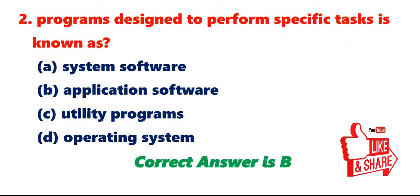Question 2: Programs designed to perform specific tasks is known as A. System software. B. Application software. C. Utility programs. D. Operating system. Correct answer is B.